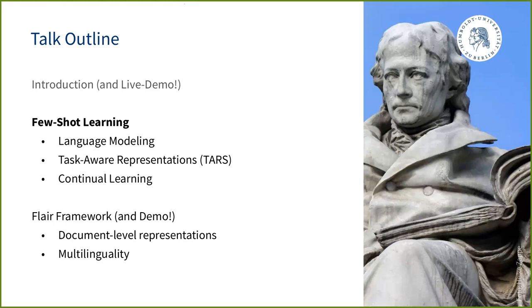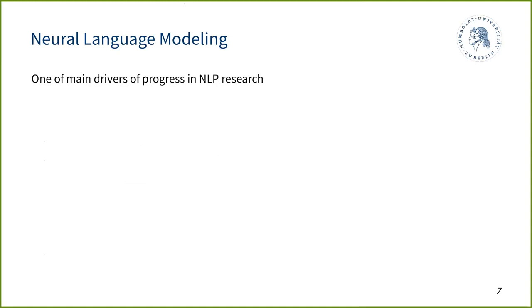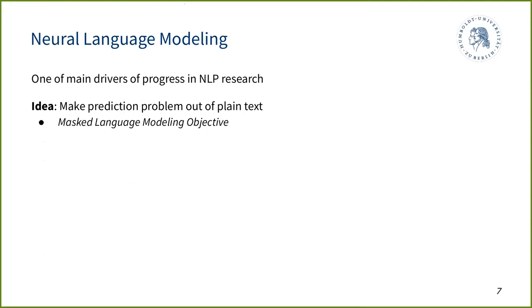Before we can understand few-shot learning the way we do it, we have to talk about language modeling. Neural language modeling is one of the main drivers of progress in NLP research, especially over the past couple of years. The main idea is to make a prediction problem out of plain text — text you could find anywhere, with no labels. You automatically corrupt the text and then train the machine to uncorrupt it.